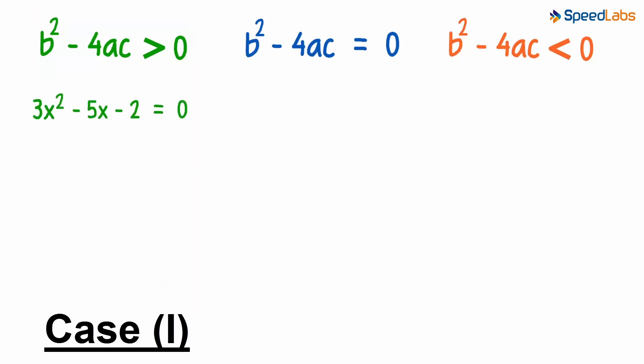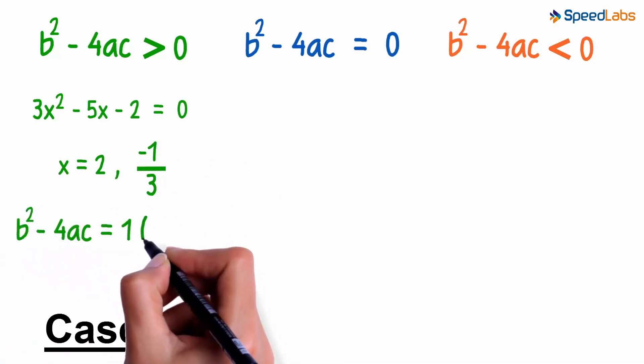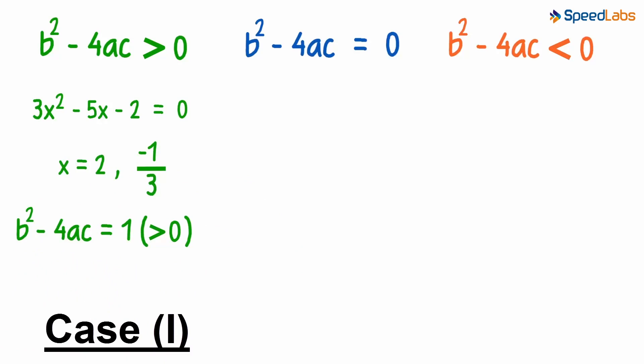Take this quadratic equation for instance. We'd solve for the roots and got the answer as 2 or negative 1 over 3. Here the value of b squared minus 4ac is 1, which is greater than zero. And we can see that the roots are real and distinct.